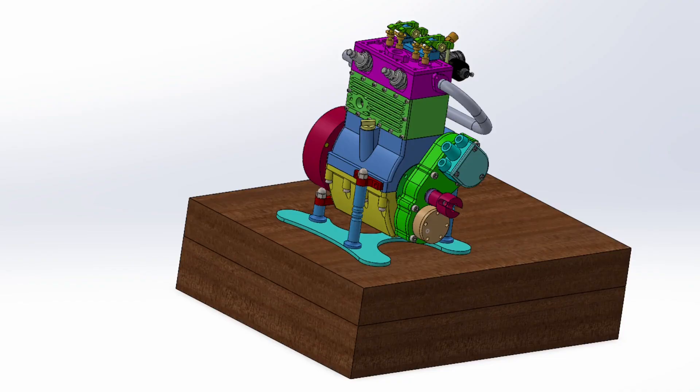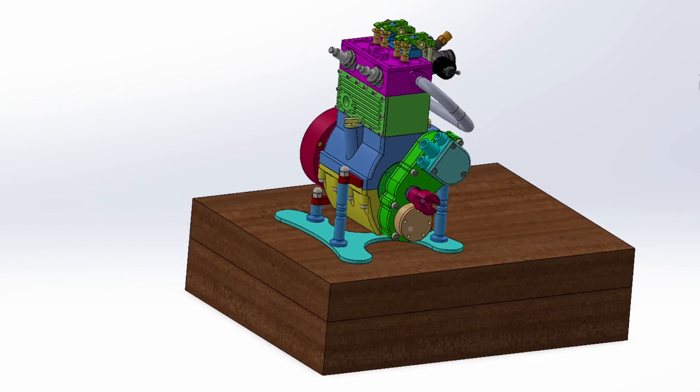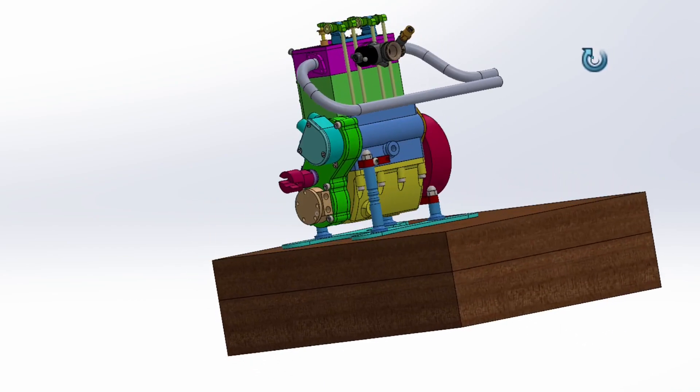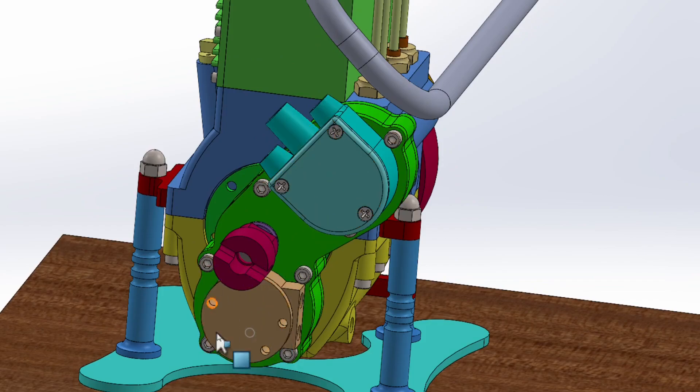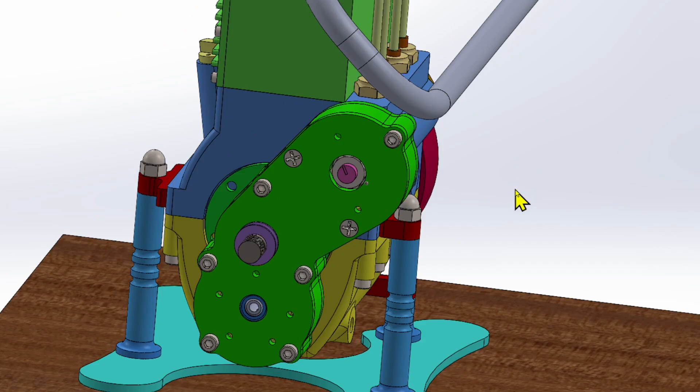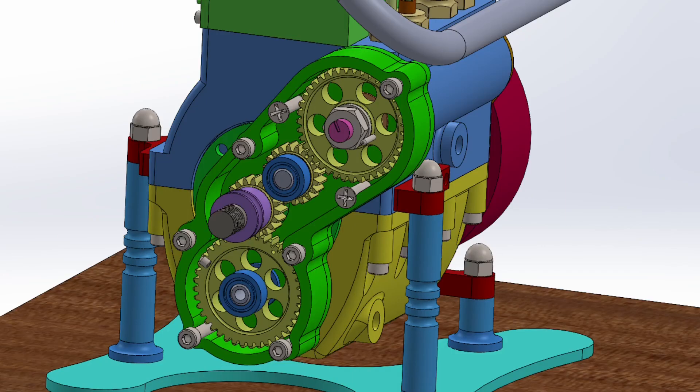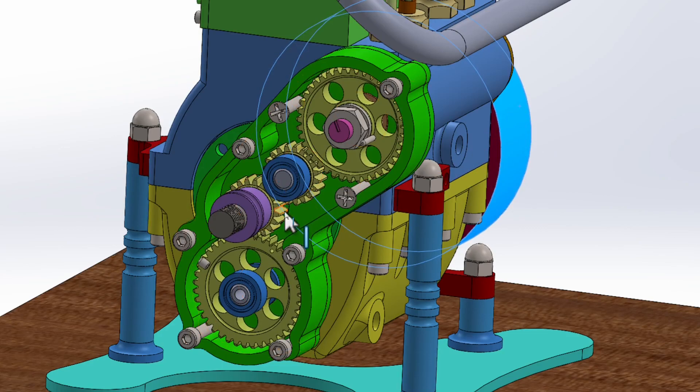Here's our engine mounted on our base. Let's take a close-up look of the timing case that we're going to be working on. This is the distributor, this is the oil pump, and this is our starter dog. Let me hide those so we can get a better view of our timing case. Here's a close-up of what's inside the timing case. The crankshaft is connected to a crankshaft pinion, which turns an idler gear, which turns the camshaft spur gear. The crankshaft pinion gear also turns a large spur gear connected to the oil pump.